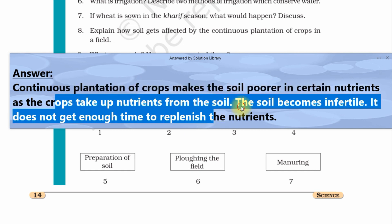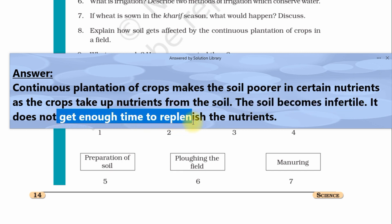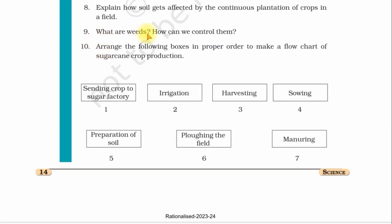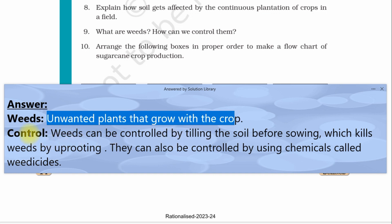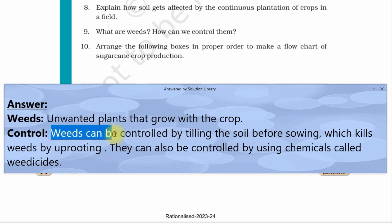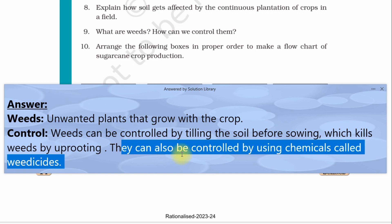Question number nine: What are weeds? How can we control them? Answer: Weeds are unwanted plants that grow with the crop. Weeds can be controlled by tilling the soil before sowing, which kills weeds by uprooting. They can also be controlled by using chemicals called weedicides.